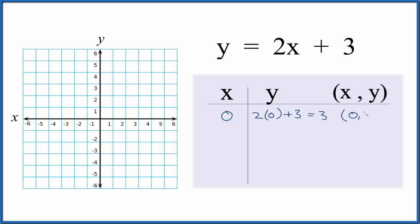So my first point is 0,3, and I can put this right here on the graph. So x is 0 right here, and then we go up 1, 2, 3.